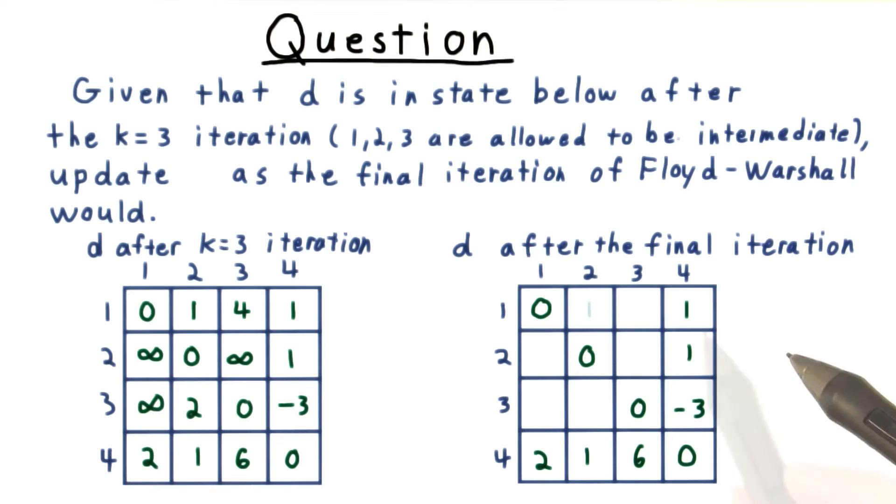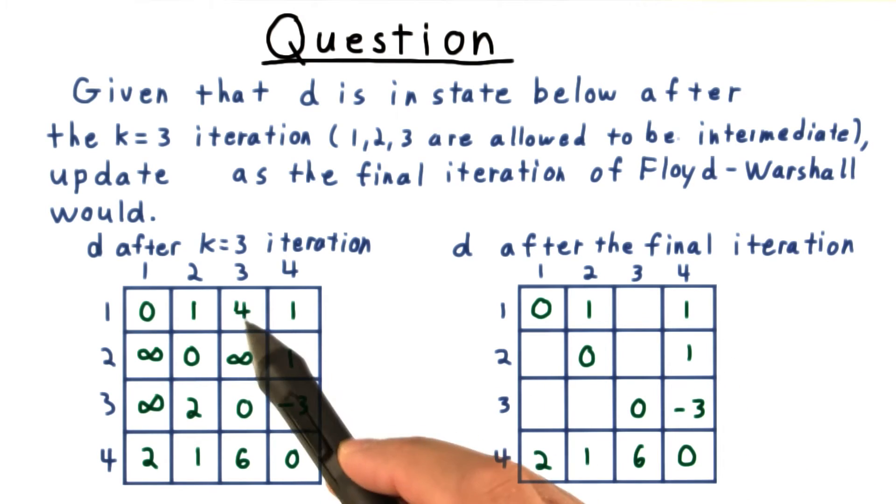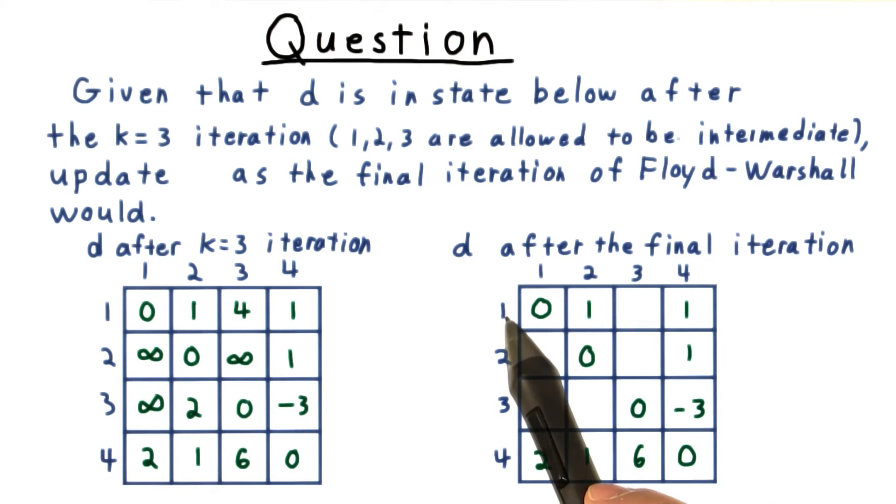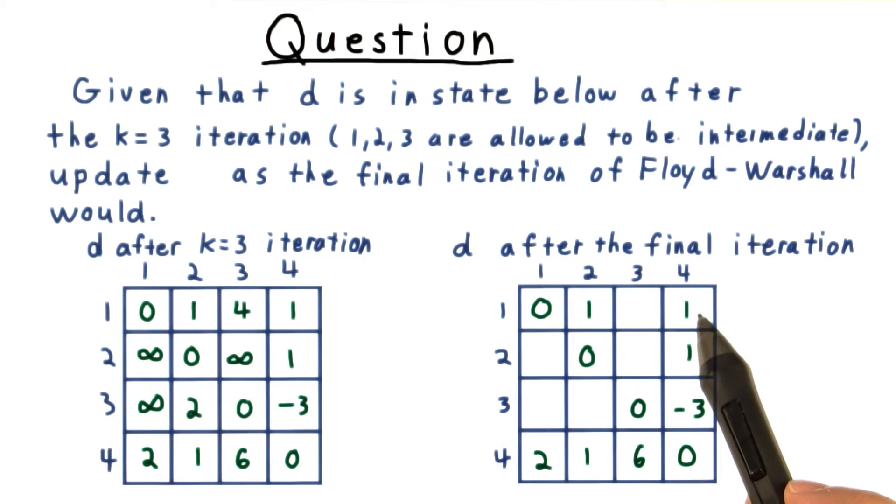Now for the remaining entries. The choices for going from 1 to 3 are either to use the old path, which costs 4, or to go from 1 to 4 and then from 4 to 3. That costs 7, so the old path is better.